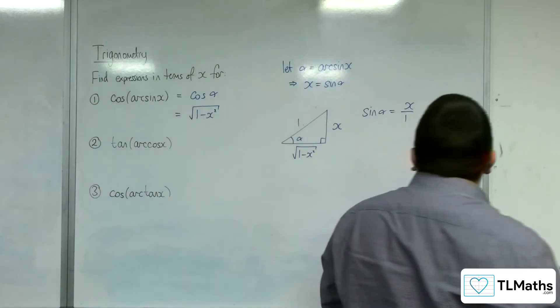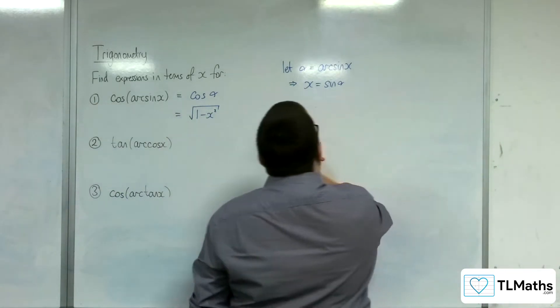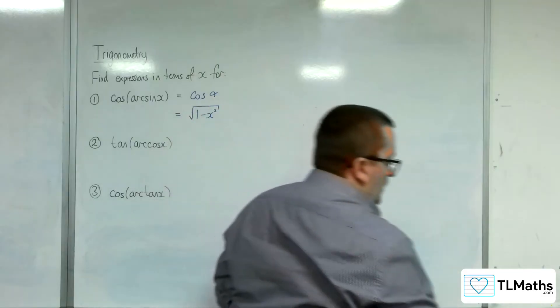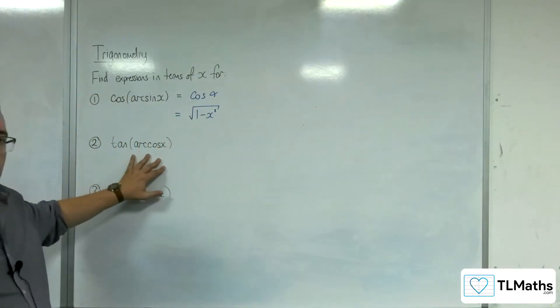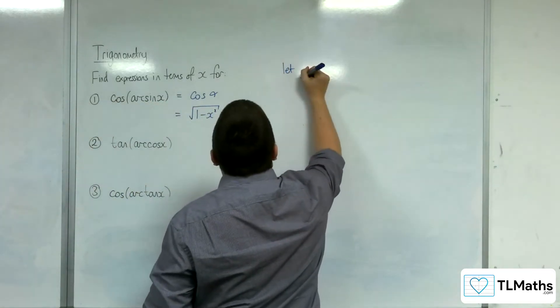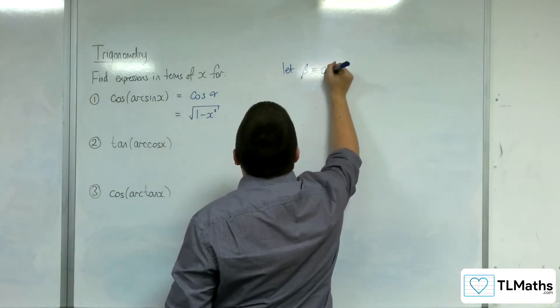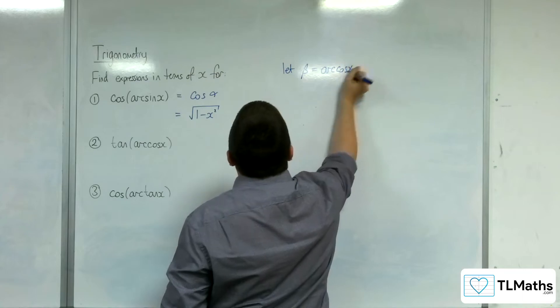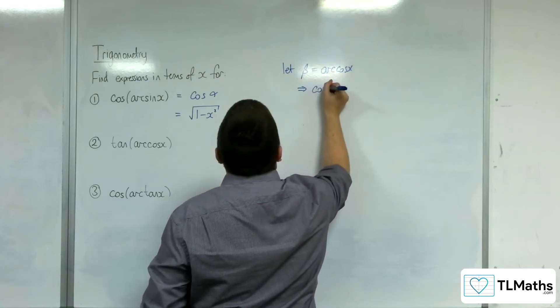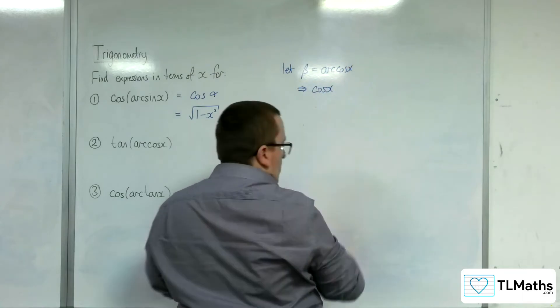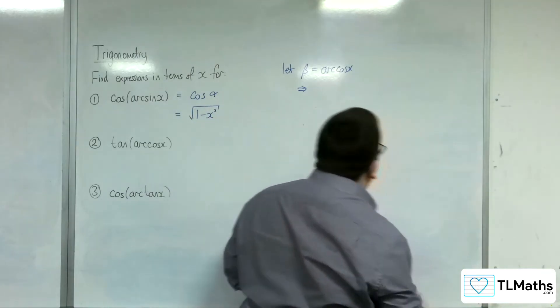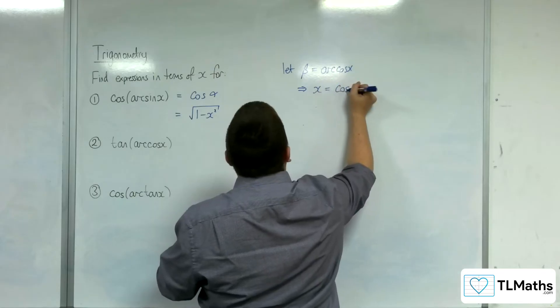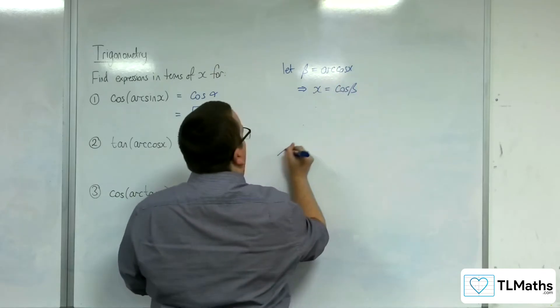Right, so we're going to use a similar method for these others. So tan of arc cosine x. Let's say beta is arc cosine of x. So that means that x is cosine of beta.